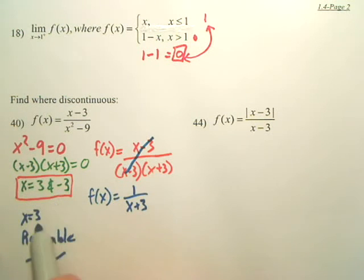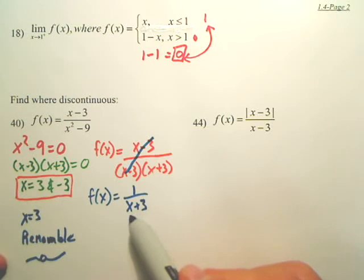Both are discontinuous, but x equals 3 is removable. x equals negative 3, because when you look right here, negative 3, no matter what you do, will always be discontinuous. We'll always have a weird spot. That will probably be an asymptote.